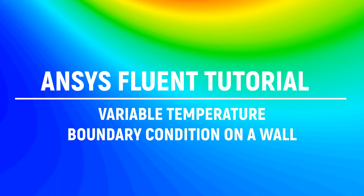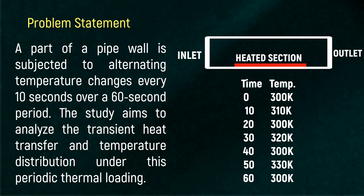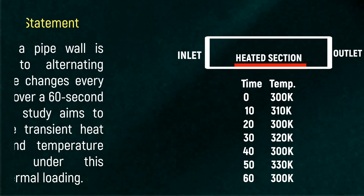Hello friends, welcome to ANSYS TUTOR. In this video, we are going to analyze a variable temperature boundary condition on a wall. It is going to be a transient analysis. It is a 2D pipe geometry in which water is flowing; the bottom wall at a certain section is subjected to an alternating temperature which changes every 10 seconds. We have selected a 60-second time period to analyze the various temperatures at various time steps.